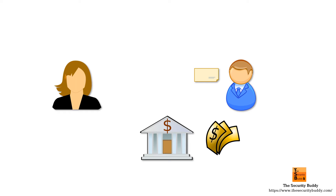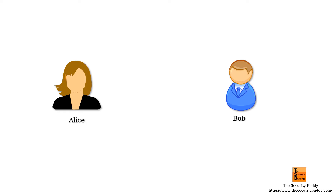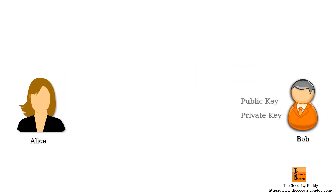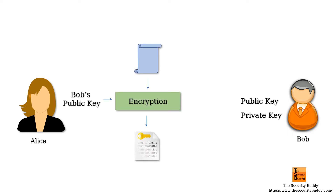In cyber security, let's say Alice has sent a message to Bob. Later, Alice finds some problem with the message and falsely claims that she did not send it. Note that even if Alice sends a message after encrypting it with Bob's public key, she can easily claim she did not send it, because Bob's public key is public to everyone — Alice can claim that someone else sent the message to Bob.